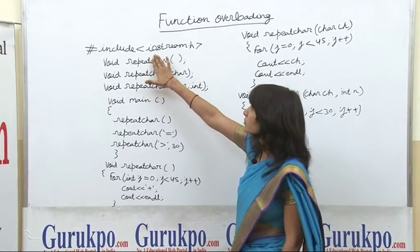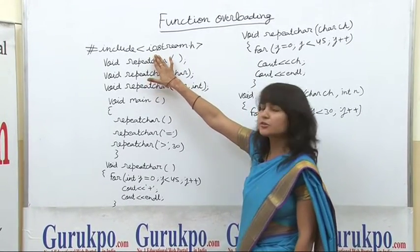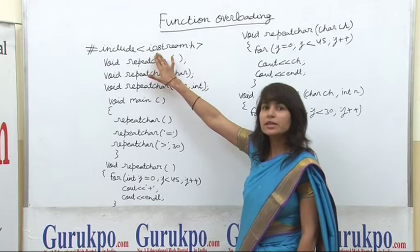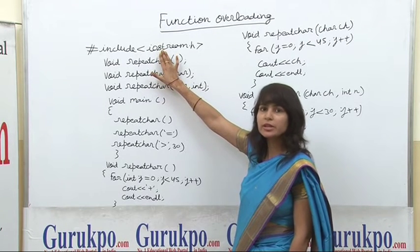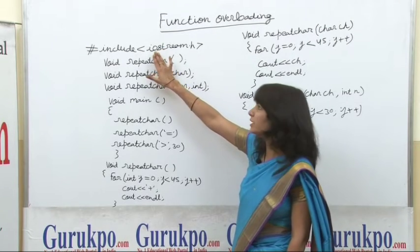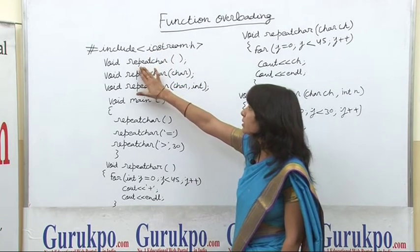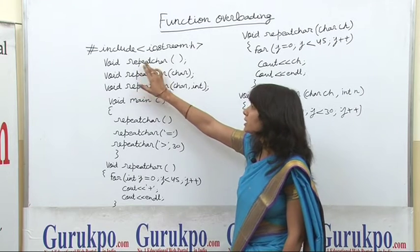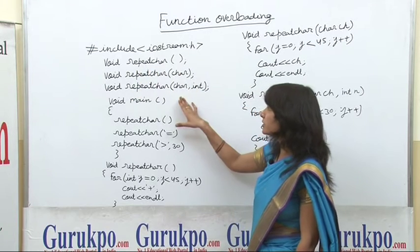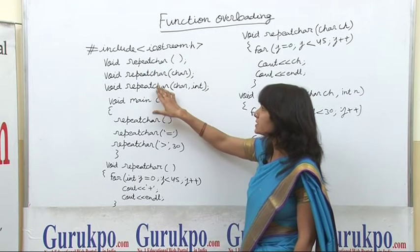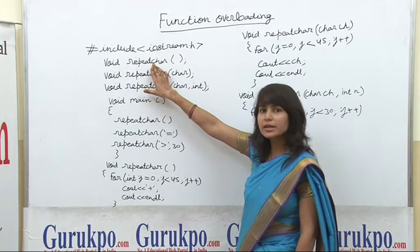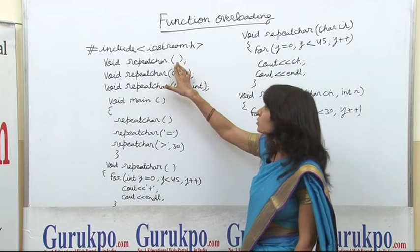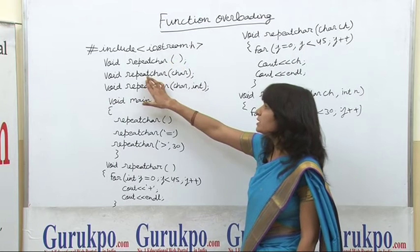We start from the hash include istream.h — here we include the istream.h header file in the program. Now, there are three functions with the same name: void repeat_character with no argument,